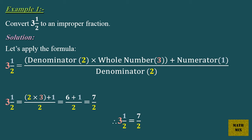3 and 1 half equals 2 times 3, plus 1, over 2, which equals 6 plus 1 over 2, which equals 7 over 2. Therefore, 3 and 1 half equals 7 over 2.